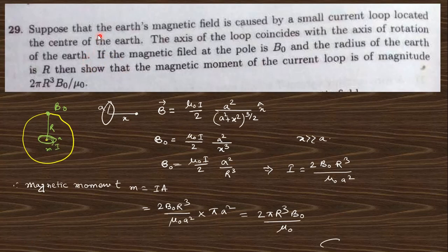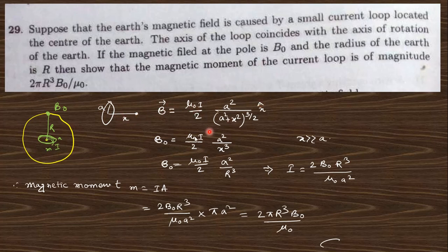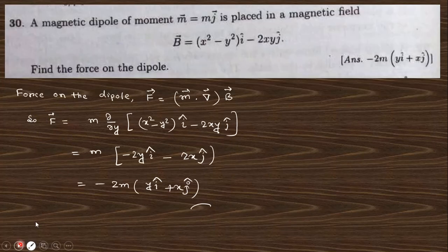Next: Suppose the Earth's magnetic field is caused by a small current loop at the center of the Earth, with its axis coinciding with the axis of rotation. If the magnetic field at the pole is B₀ and the radius of the Earth is R, find the magnetic moment of the loop. The magnetic field at axial distance x >> a from a current loop is known. Since x >> a, setting x = R gives the expression for B₀. From this, the current I in the loop is found, and the magnetic moment m = I × πa² gives the final answer.